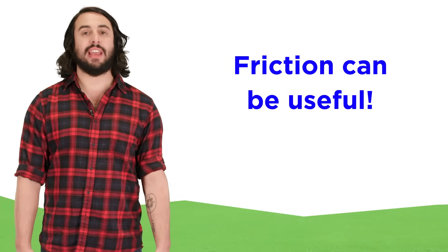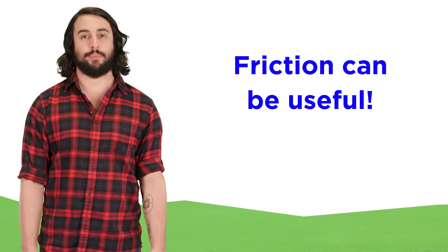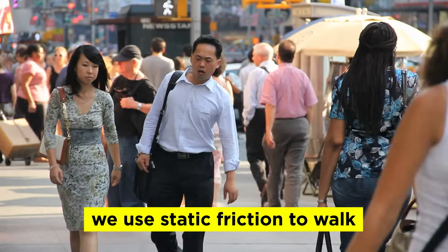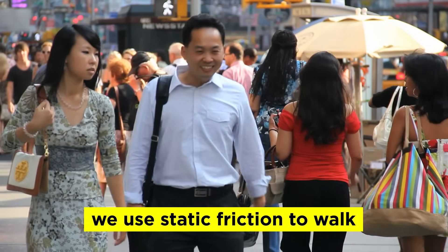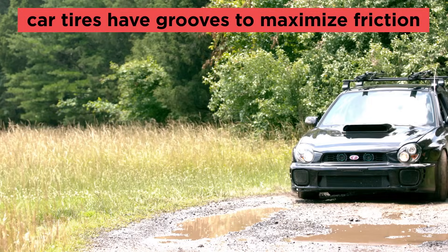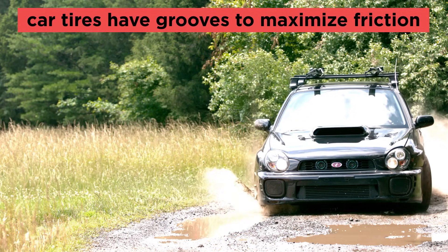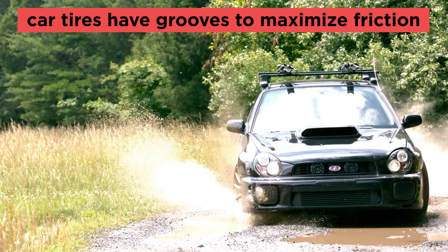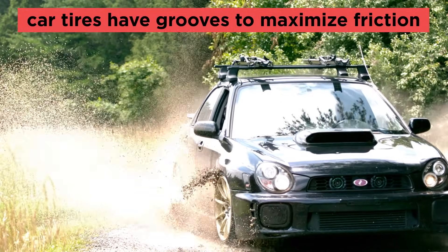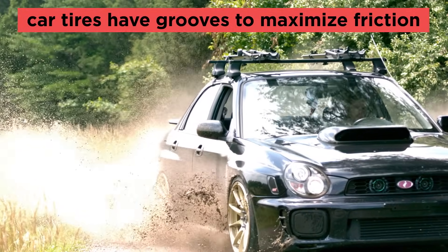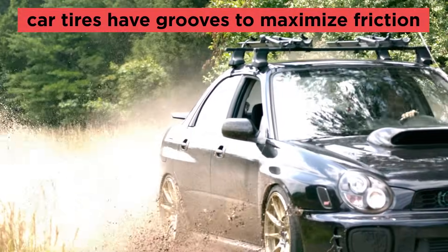Friction isn't always a nuisance, it can also be used to our advantage. When we walk, the static friction between our feet and the ground allows us to propel ourselves forward, rather than our feet simply sliding back. Car tires take advantage of friction to move the car forward, and they are designed with grooves to divert water away so that it does not interfere with the contact between the tire and the ground. This allows it to maintain traction rather than skidding.